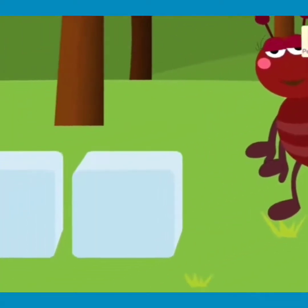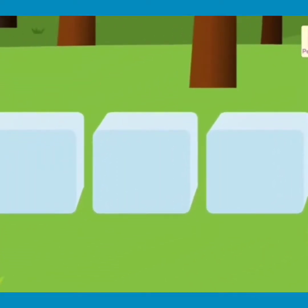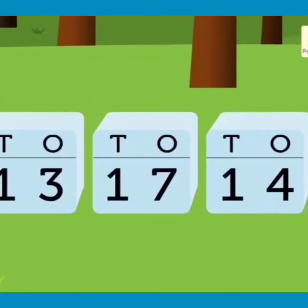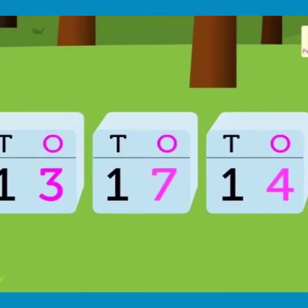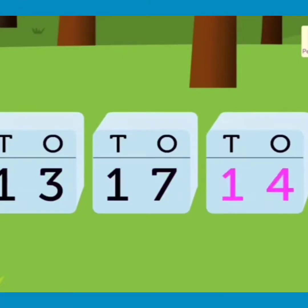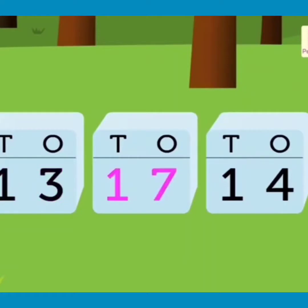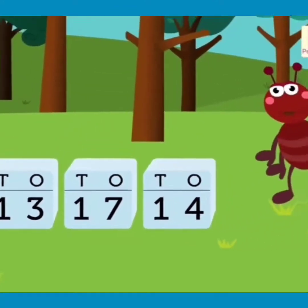Look at the sugar cubes. Each sugar cube has a number written on it in the form of tens and ones. The numbers are 13, 17, and 14. Let's arrange 13, 17, 14 in ascending order with the help of Tob.